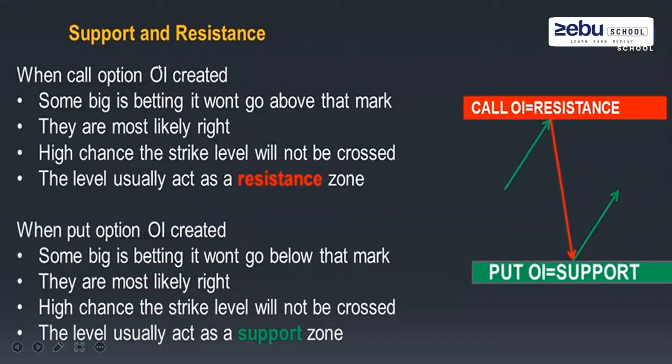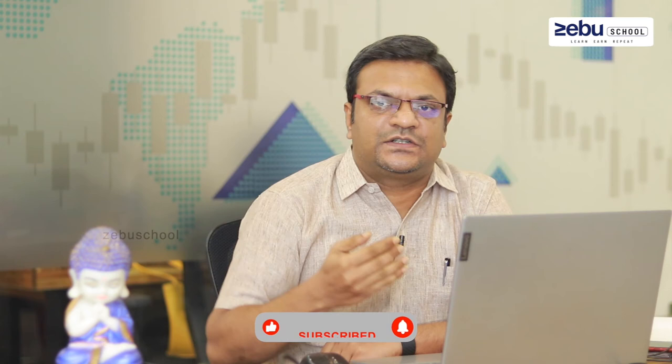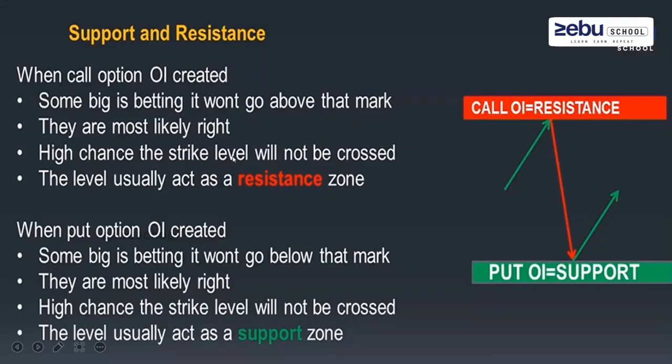In the support and resistance zone, we must follow these steps as mandatory. When call side open interest is created, someone is bidding in that particular area. For example, if the market is floating at 100 and someone is bidding the biggest quantity at 1200, then 1200 will act as a strong resistance in the stock market.